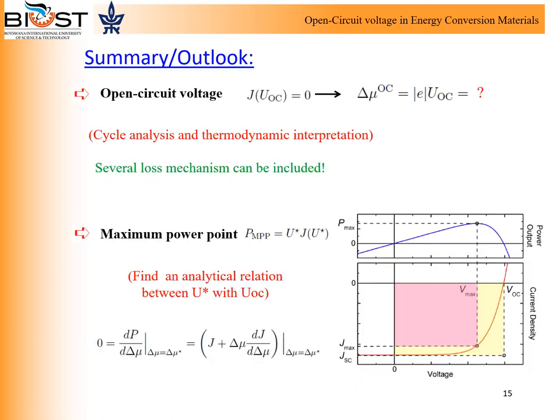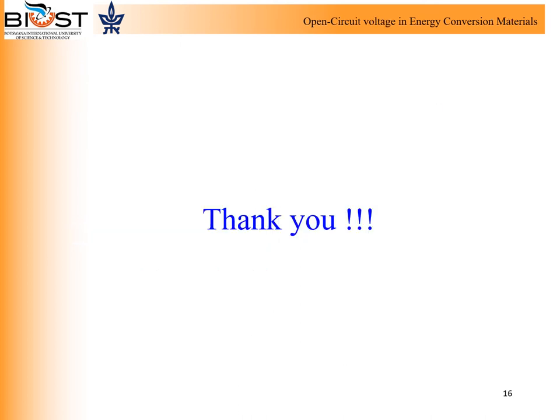Now I come to the conclusions. In this talk, we could show that the open-circuit voltage is a restricted thermal equilibrium point. Moreover, a cycle analysis could be used to calculate the open-circuit voltage in which the charge transport is dominated by thermal hopping. Finally, the analytical results for the open-circuit voltage can be used to estimate U*, the voltage related to the maximum power point. Thank you very much for listening.